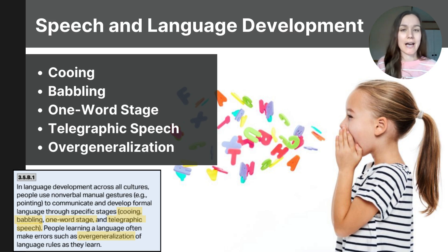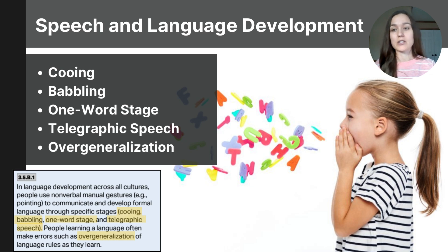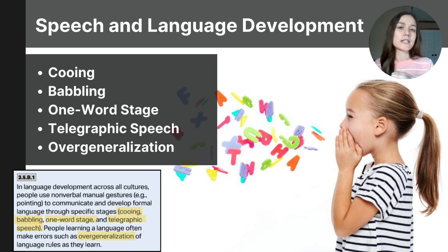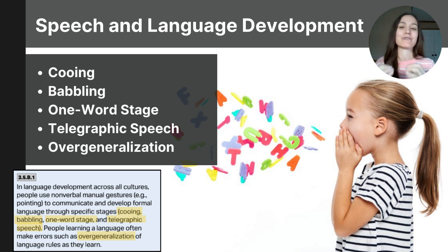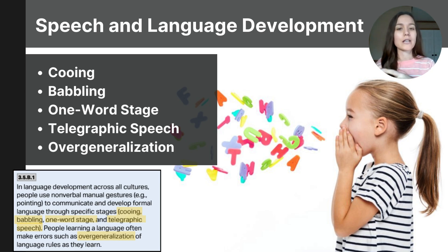The one-word stage happens at about 12 months of age. Babies use single words to convey an idea, such as saying 'dog' or 'mom' to communicate meaning. Next is telegraphic speech, around two years of age, when toddlers start stringing together two to three words focusing on key words like nouns and verbs. It resembles a telegram — very short phrases — such as 'go walk, mommy' or 'want milk.' They're still missing some elements of sentence structure, but they're creating meaningful communication.